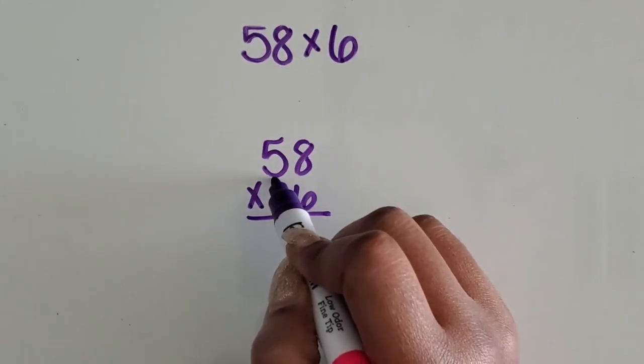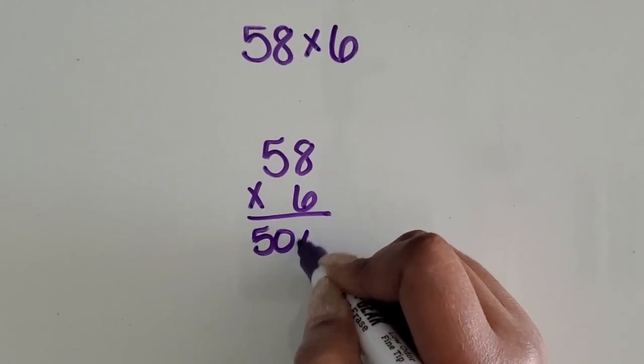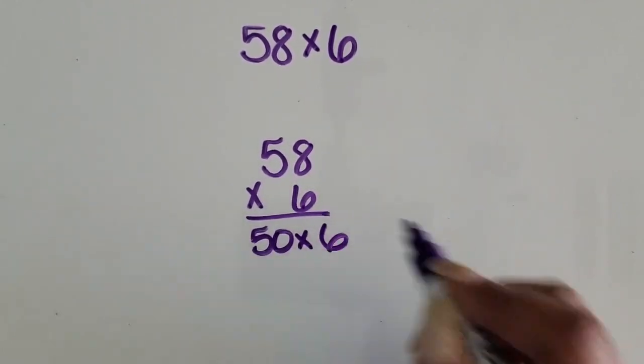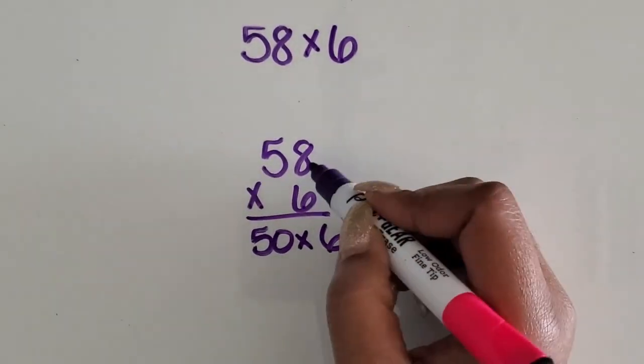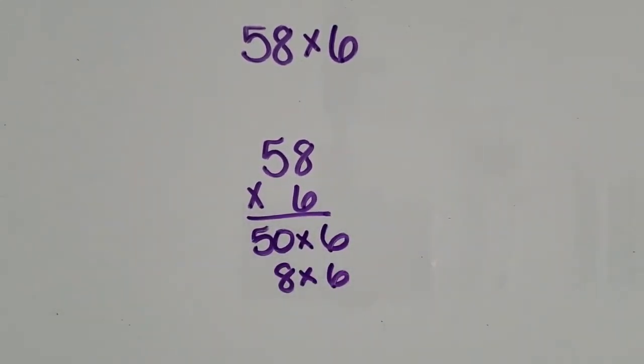I know that five is in the tens place, so it represents 50, and I'm going to multiply that 50 times six. The eight is in the ones place, so it represents ones, and we're going to multiply that eight by six.